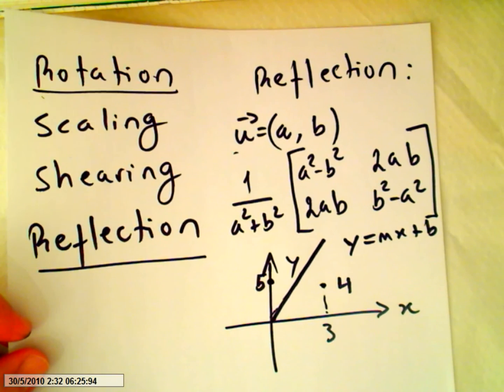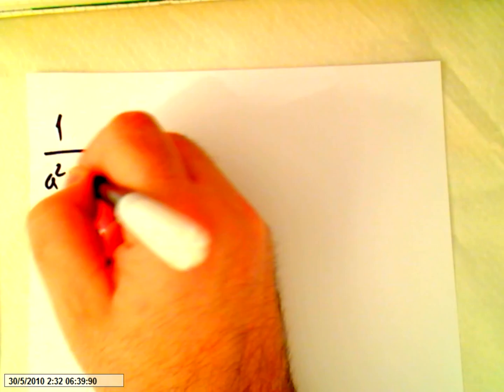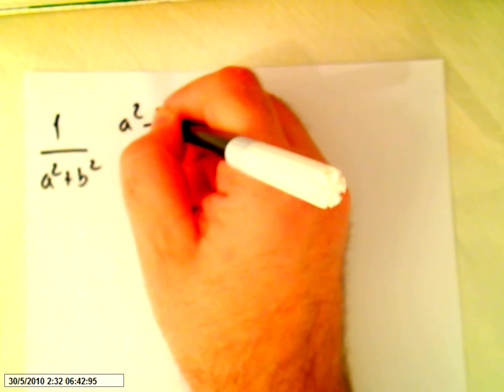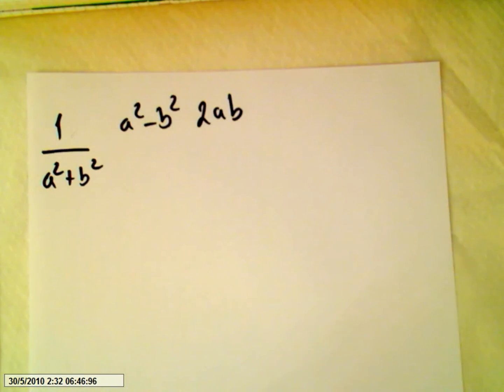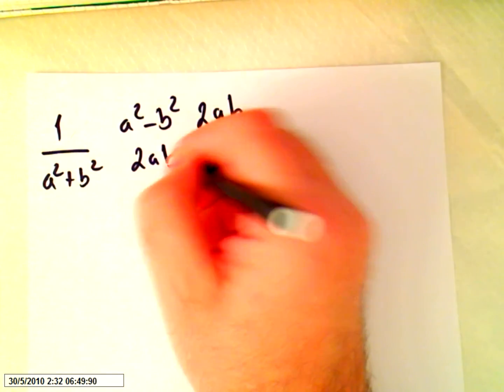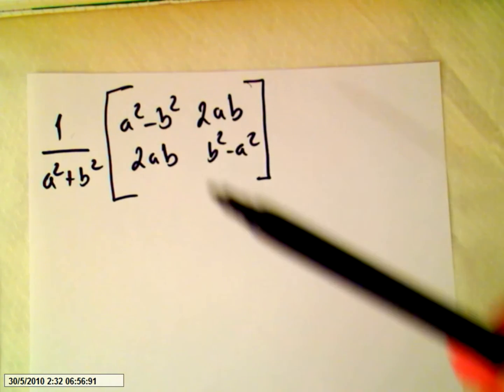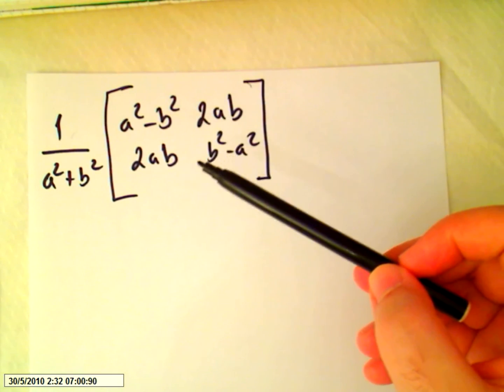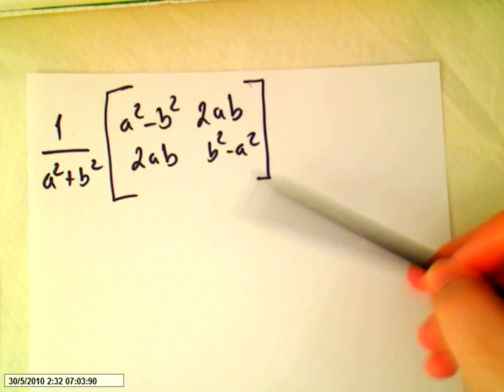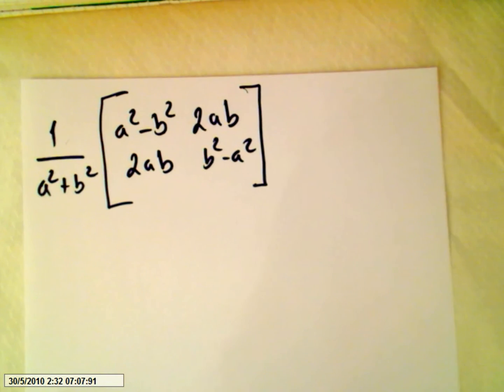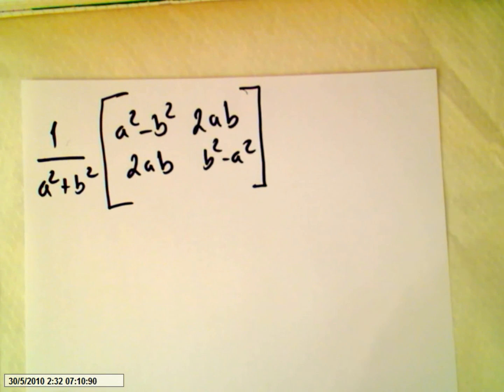Now what we are going to do is, I'm going to rewrite the reflection matrix: 1 over a squared plus b squared, times [a squared minus b squared, 2ab; 2ab, b squared minus a squared]. This is really easy to remember. Obviously this is the matrix for any reflection on a line on the xy plane. We are doing all this in 2D, two dimensions. And now our points were (0,5).